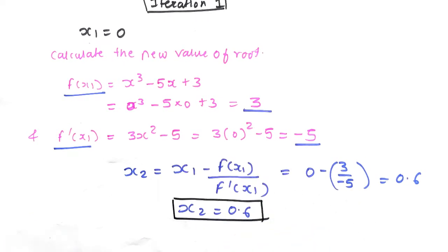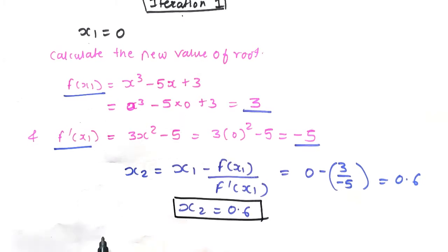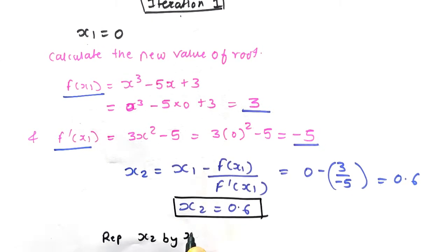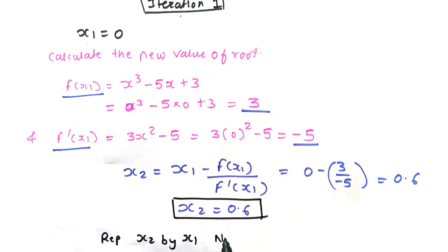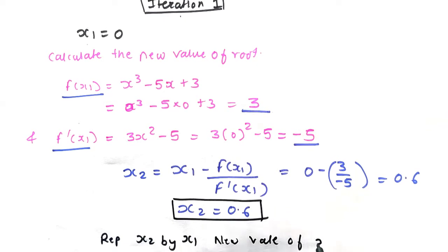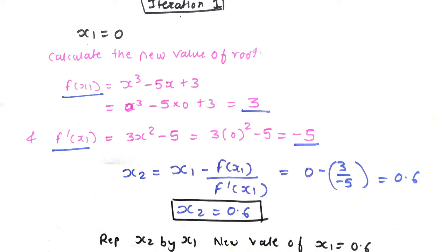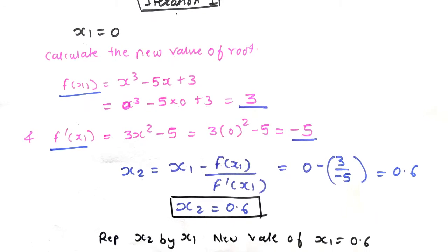We have to perform 3 iterations total. After the first iteration, replace x2 by x1. So the new value of x1 will be 0.6, and we proceed to the next iteration.